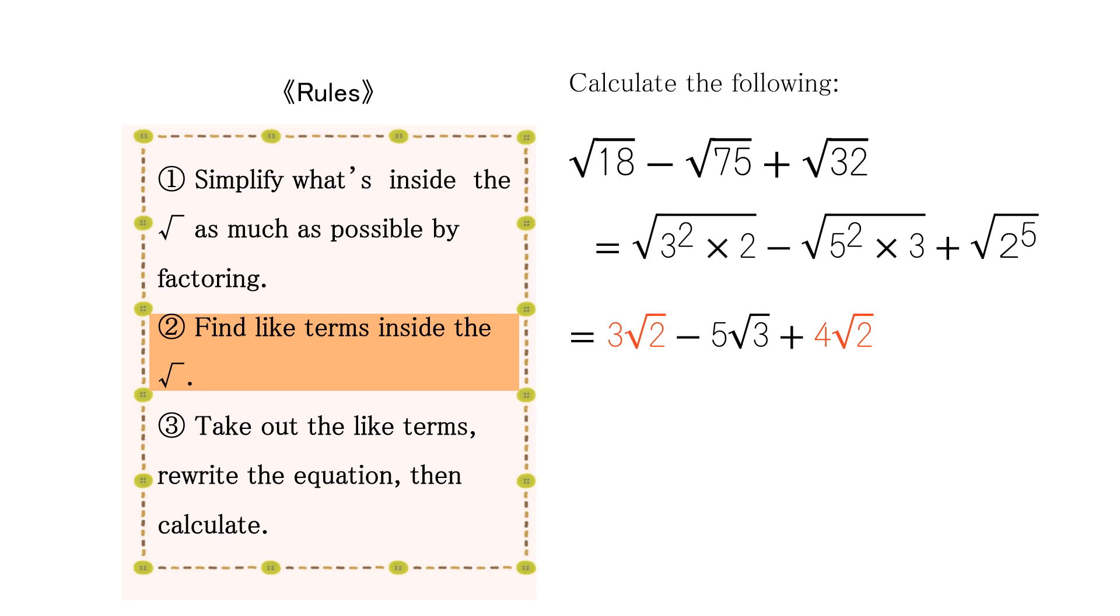Next, we find like terms inside the square roots. In this case, we have 3 square root of 2 and 4 square root of 2.